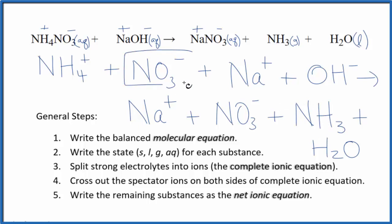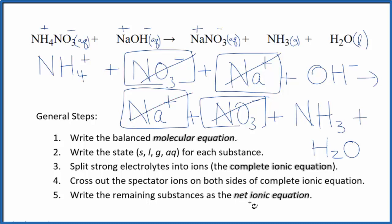But we do have the nitrate ion in the reactants and in the products. We can cross that out. We have the sodium ion again in the products. We can cross that out. And what's left, that's the net ionic equation for NH4NO3 plus NaOH.